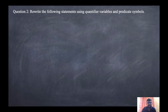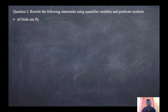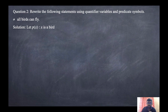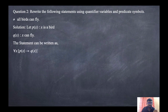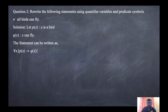Now consider the second example: rewrite the following statements using quantifiers, variables, and predicate symbols. First: 'all birds can fly.' Let P(x) be 'x is a bird' and Q(x) be 'x can fly.' Since 'all' means universal quantifier, the statement becomes: ∀x [P(x) → Q(x)], meaning for all x, if x is a bird then x can fly.